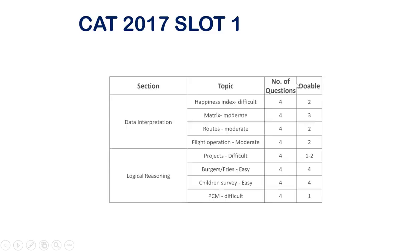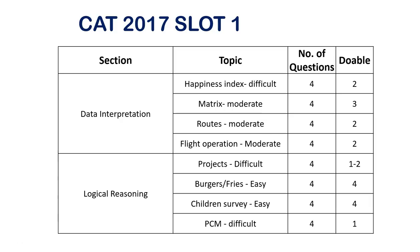Let's go ahead and do the CAT 2017 Slot 1 analysis. A lot of you have heard that 2017 LRDI was on the same level as 2016 — but actually it was a little bit tougher. That's the reason the attempt went down and the cutoff also went down. To get around 80 percentile in 2016 you needed about 8 questions; in 2017 it was around 7 questions.